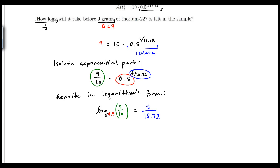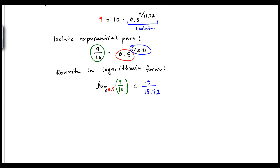Again, this is an exponential form, equivalently this is the logarithmic form. So I can easily solve for T here by multiplying each side by 18.72, since it's in the denominator. So then I get, on the left side, 18.72 times log base 0.5 of 9 tenths equal to T.